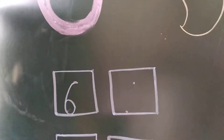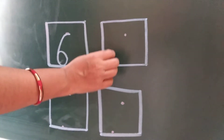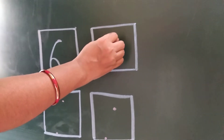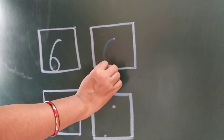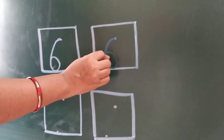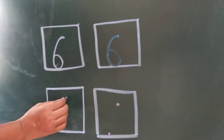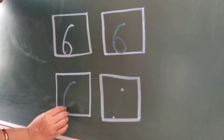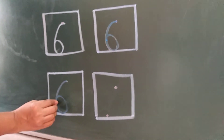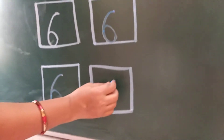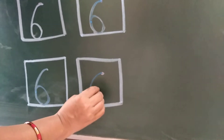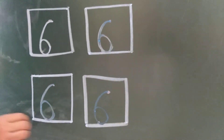In each box I give 2 dots. Start from the first dot. Make a curve, then join this line here. This is 6. Curve, then join this line here. This is number 6.